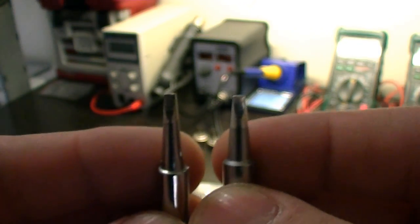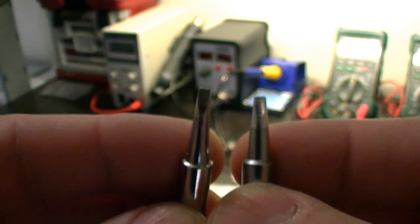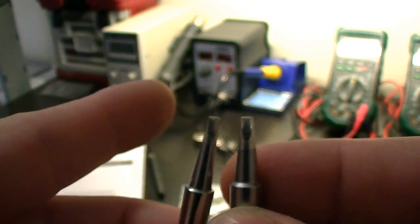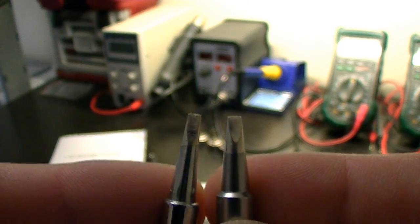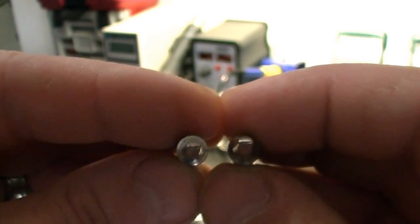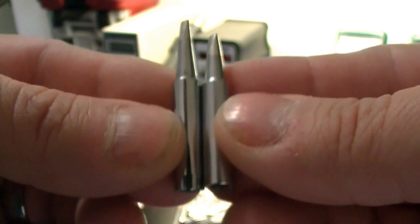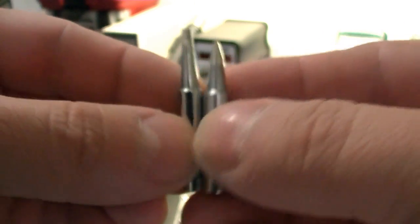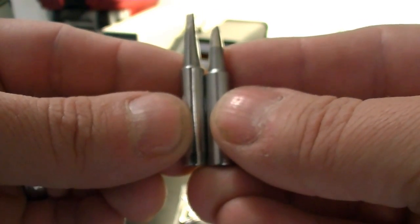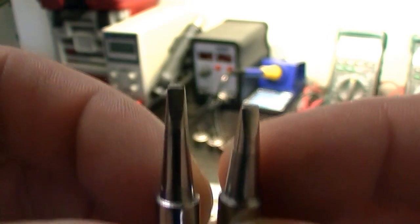Now if we look at the tips, the one on the right is an actual Hakko branded tip. The one on the left is the one that came with the unit itself and you can actually see they're both basically the same. Both about the same amount of thickness. They are almost the exact same length. The off-brand one is just ever so slightly longer but it shouldn't really matter. So they are very compatible.